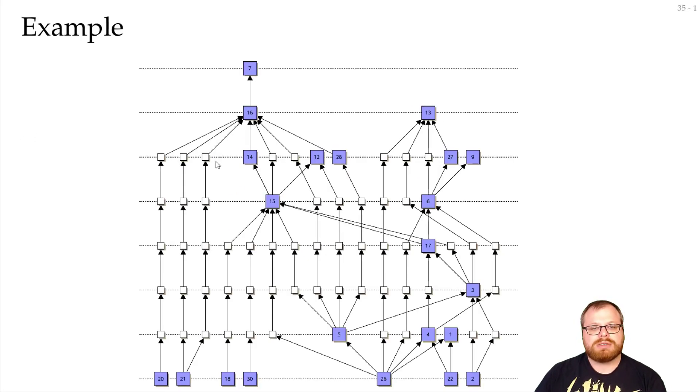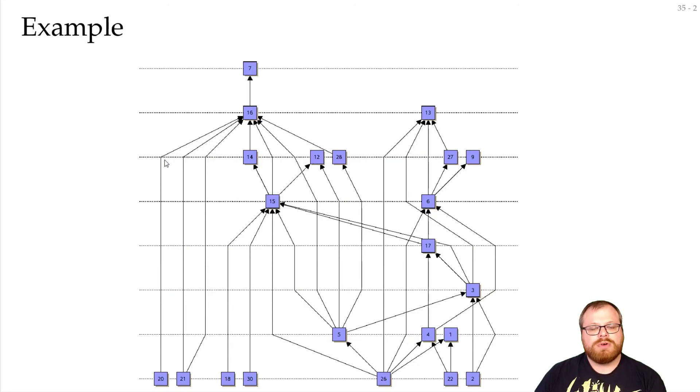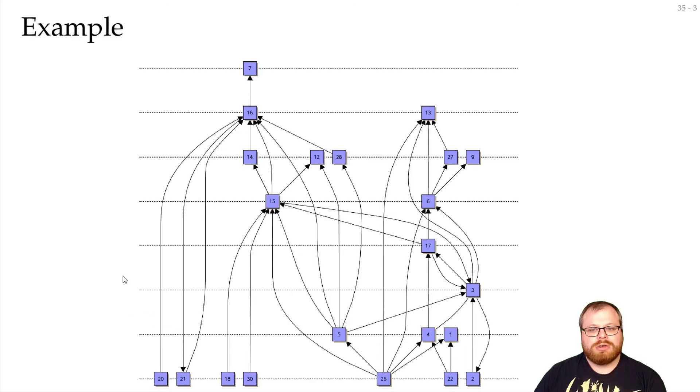So we take our drawing, we remove all the dummy vertices, and then we draw a Bézier curve that has these bend points as control points. And we get a drawing like this. And this would be the output of our algorithm.